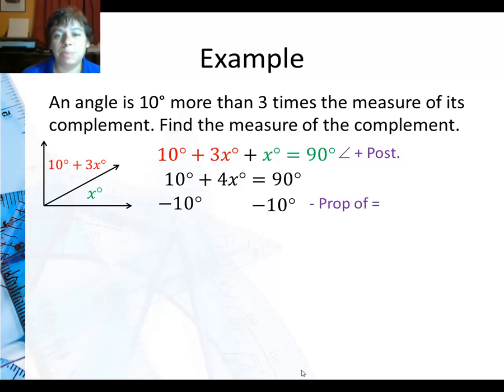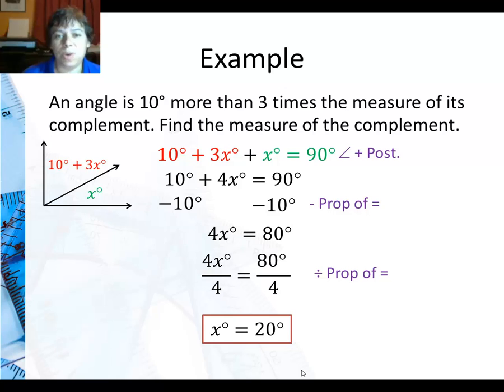Subtract 10 from both sides by the subtraction property of equality. Means I can subtract the same thing from both sides. 4X equals 80. Divide both sides by 4 by the division property of equality. And I get X is 20.